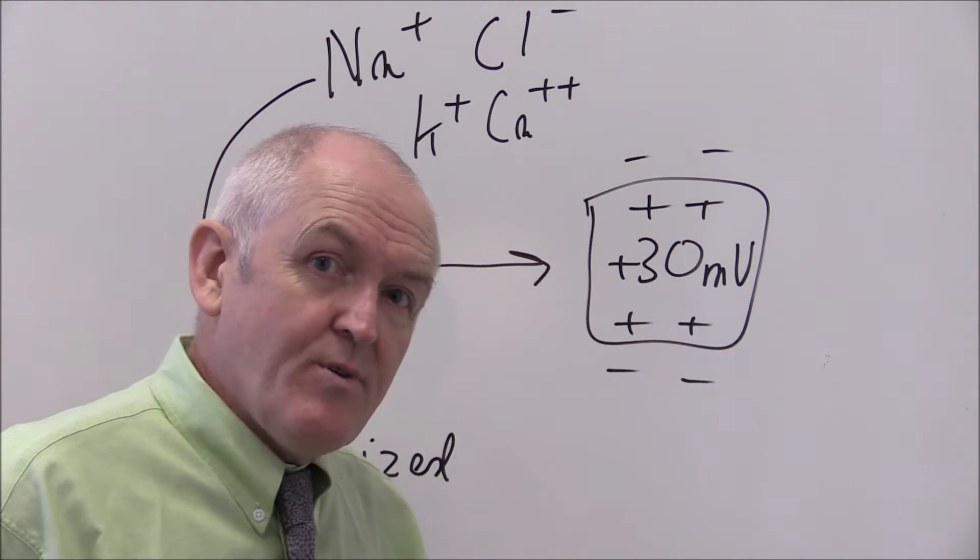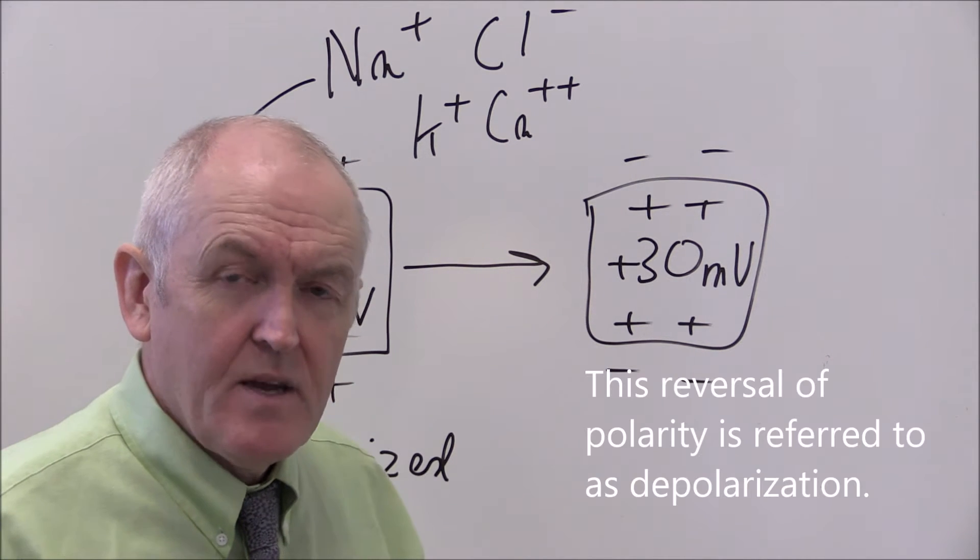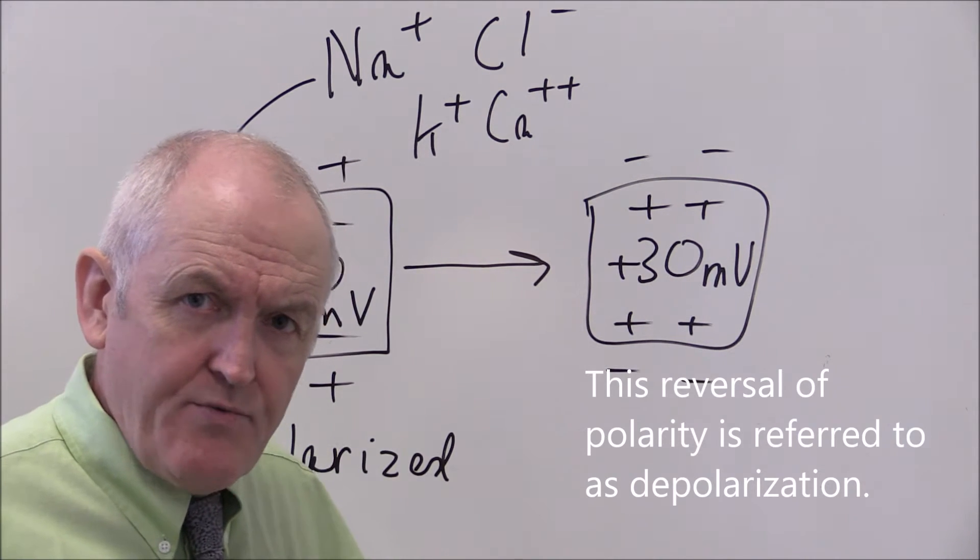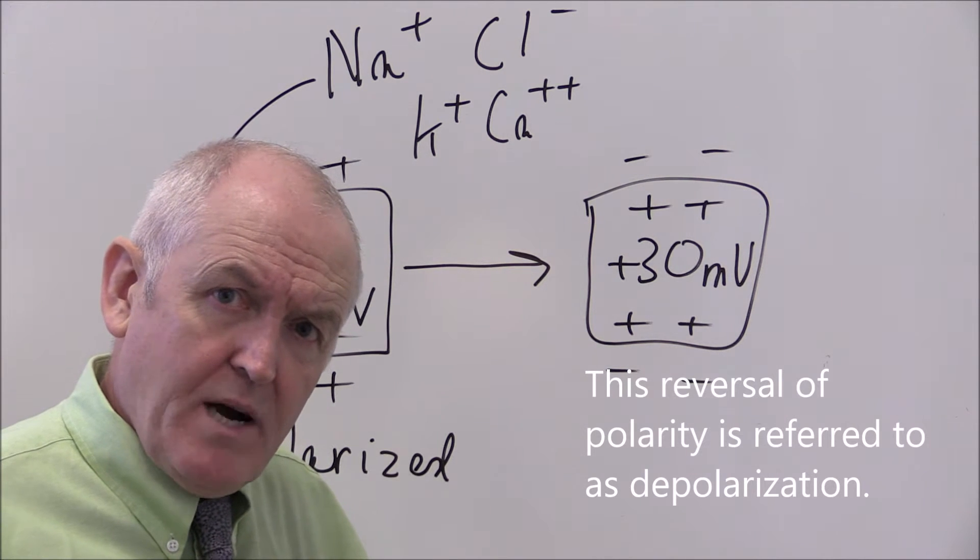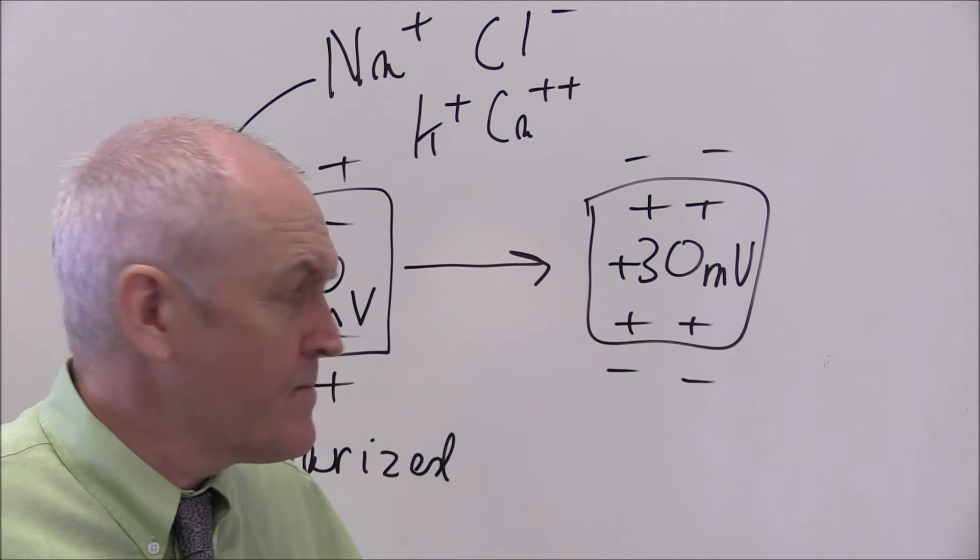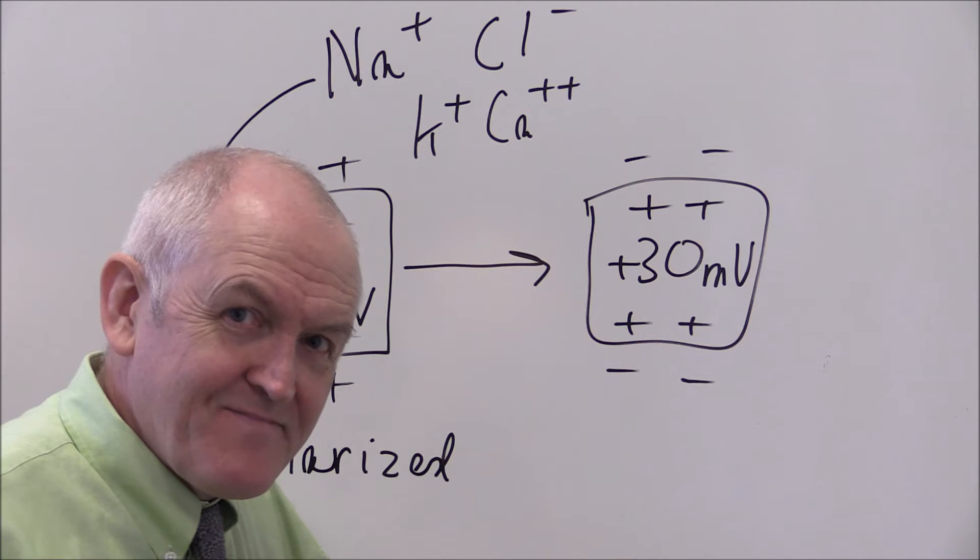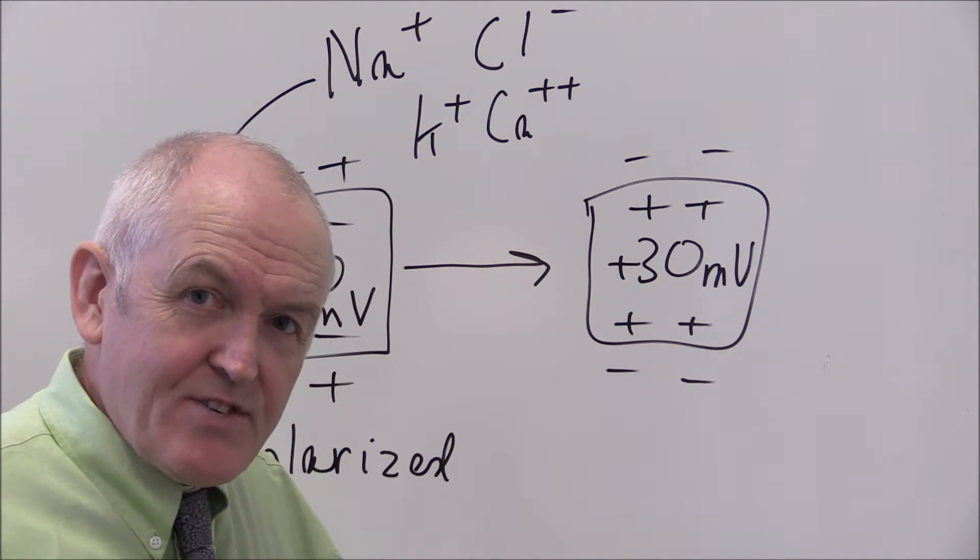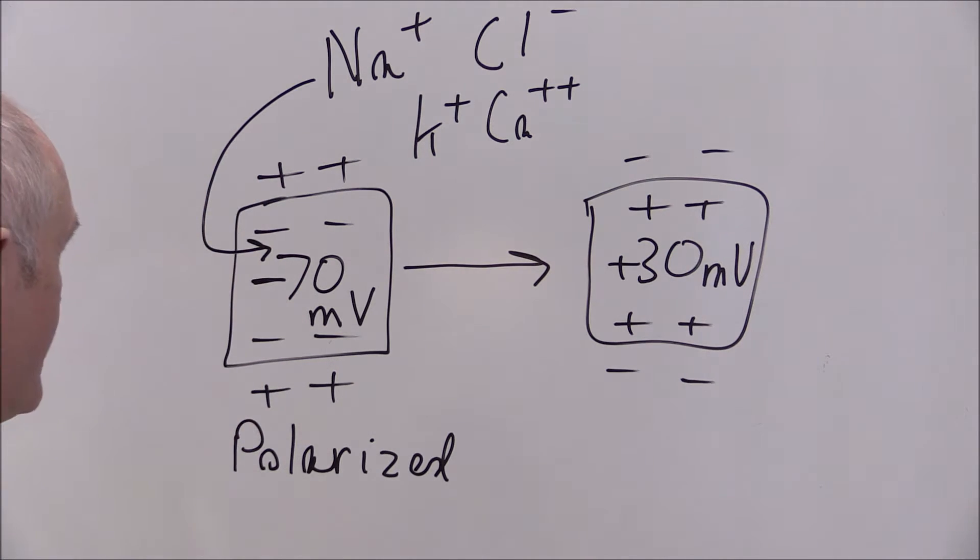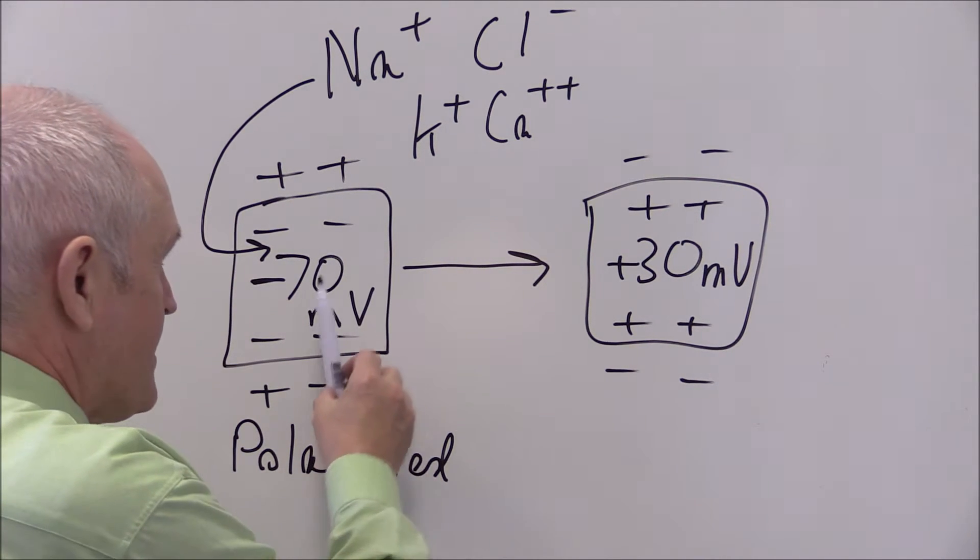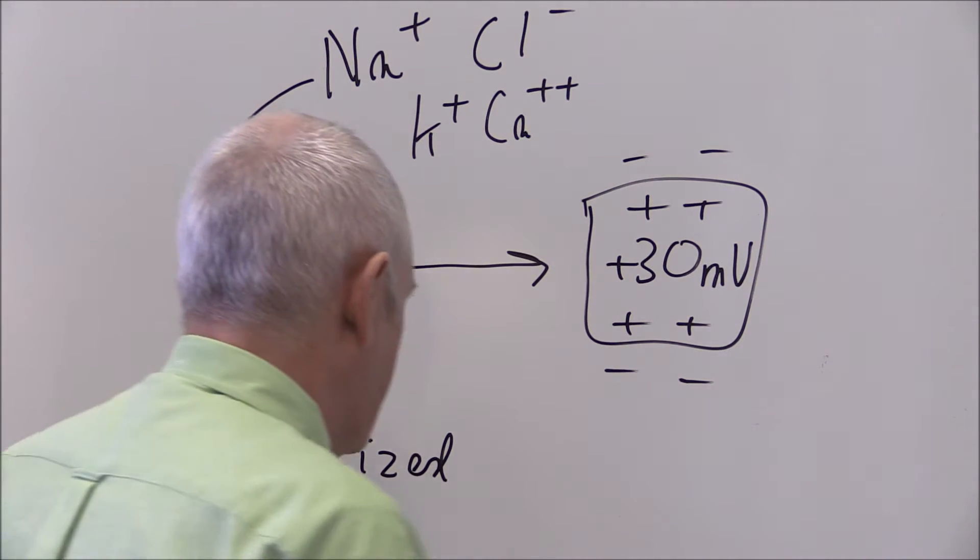So it's quite reasonable to say that the nervous system is running on electricity. Your mobile phone might be running on three, six or nine volts. Your domestic appliances at home might be running on 220 or 240 volts. And your nervous system is running on a tenth of a volt. So it's still electrical, just relatively low voltages. And when the cell changes from being negative inside to being positive inside we say it is in a state of depolarization.